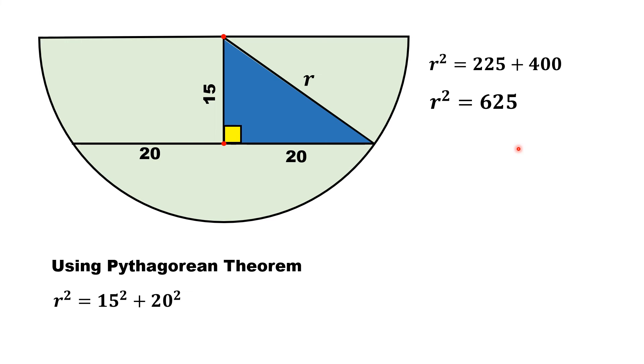If we take square root on both sides, we will have r is equal to 25. We have just neglected the negative root as r is a length and length can never be negative. So, r is 25 units.